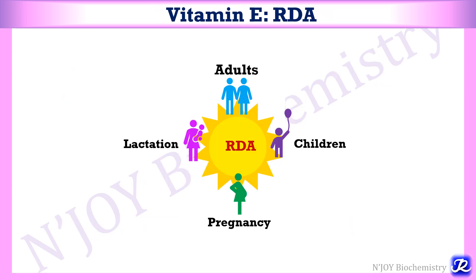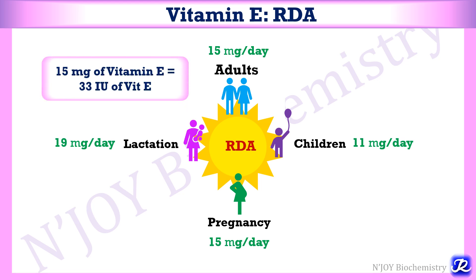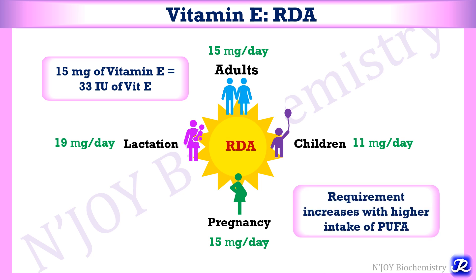The recommended dietary allowance for vitamin E: in adults, the requirement is 15 mg per day; in children, it is 11 mg per day; in pregnancy, 15 mg per day; and during lactation, 19 mg per day. 15 mg of vitamin E equals 33 international units. The requirement increases with higher intake of polyunsaturated fatty acids.